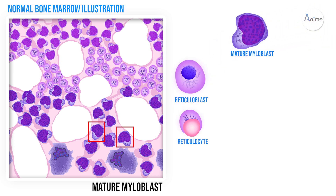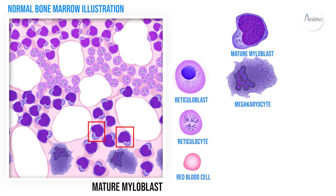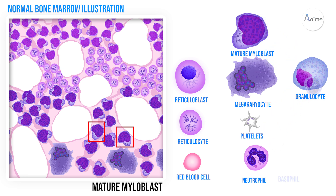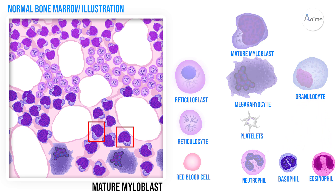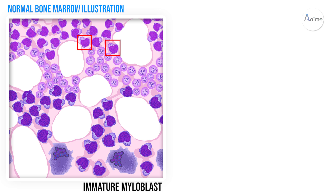The mature myeloblasts will produce reticuloblasts, then reticulocytes, and from them the RBCs will form. They also produce megakaryocytes which produce platelets, and granulocytes which produce neutrophils, basophils, and eosinophils. For a detailed discussion of these cell lineages, watch our video on blood cell lineage. Here we also see immature myeloblasts and between them reticuloblasts and reticulocytes.